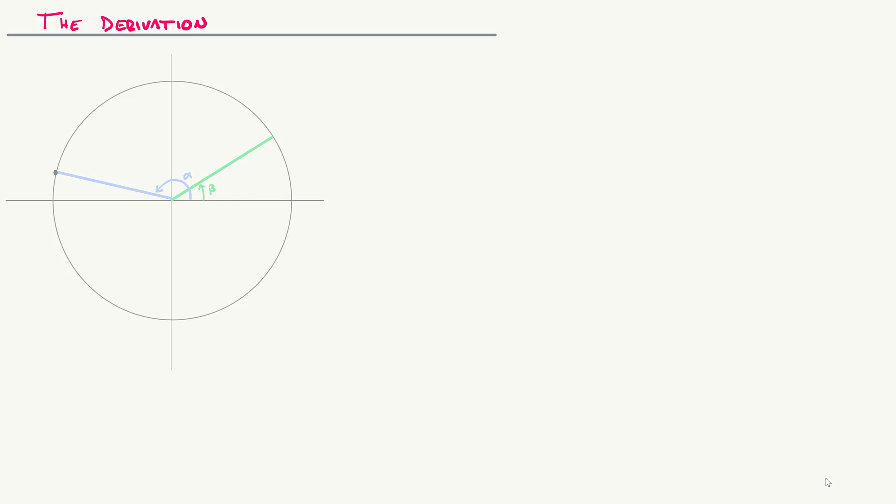What I've drawn here is a unit circle, and we're going to derive the difference identity for cosine. I've drawn a unit circle with two angles on it: angle beta and angle alpha. Since they're on the unit circle, the terminal sides each intersect the circumference at cosine alpha sine alpha, and cosine beta sine beta respectively.